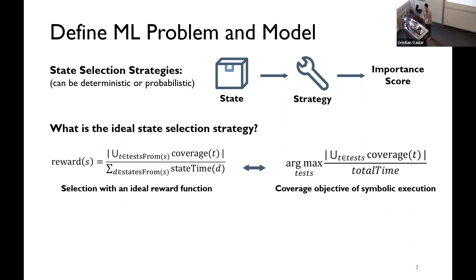Correspondingly, for state selection strategy, we define a reward function. The numerator here is, they are the tests from function, which means that which returns the set of tests originates from the state S. And, the numerator is just the total coverage of these tests. And, the denominator is the accumulated time spent on all the states that originate from the state. This reward kind of achieves the goal of symbolic execution if we can always select the state with the highest reward. But, the problem here is that we cannot calculate these tests from and states from function at the test time. Because, when we explore one state, we don't know what tests and what states we will get after exploring these states.